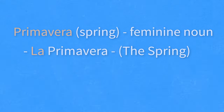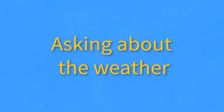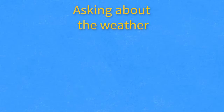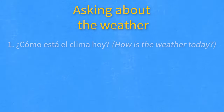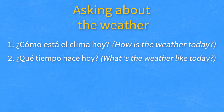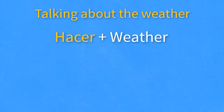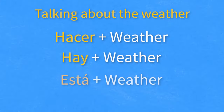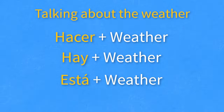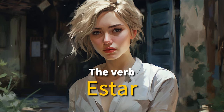Now that you've learned the seasons in Spanish, let's see how we can talk about the weather using them. Some common ways people ask about the weather are: ¿Cómo está el clima hoy? — How is the weather today? ¿Qué tiempo hace hoy? — What's the weather like today? ¿Está haciendo calor o frío? — Is it hot or cold? To answer these questions, we usually use the verb hacer (to make), the verb hay (there is), or está (it is), followed by the adjective that describes the weather. If you're unsure about the verb está, check out our video covering everything you need to know about it.